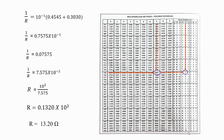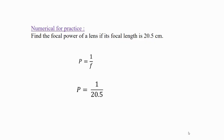So the equivalent resistance when the resistors are connected in parallel is R = 13.20 ohm. Numerical for practice: Find the focal power of a lens if its focal length is 20.5 cm. Formula: Focal power P = 1 upon F, where F is the focal length. Substituting: P = 1 upon 20.5. Find out this focal power and comment in the comment box. If you are a student, do like, share and subscribe to my channel. Thank you.